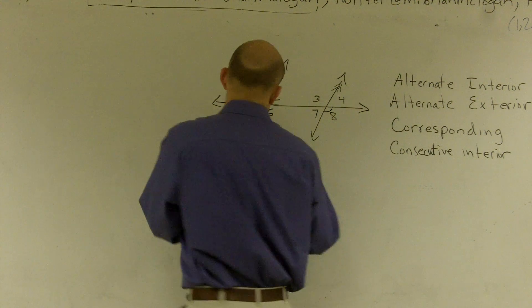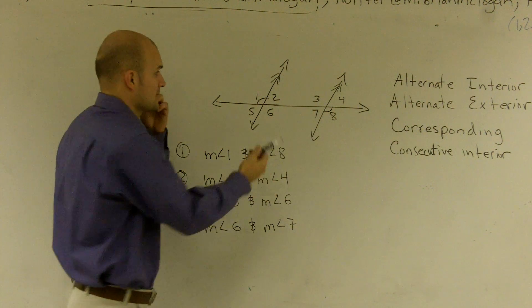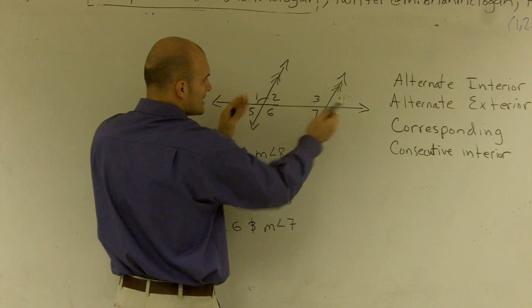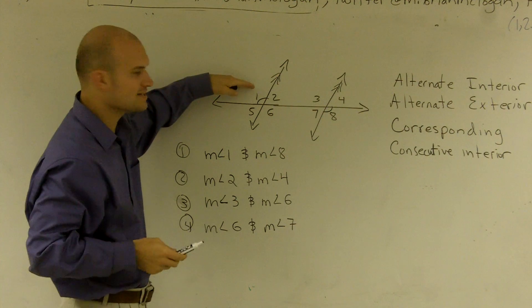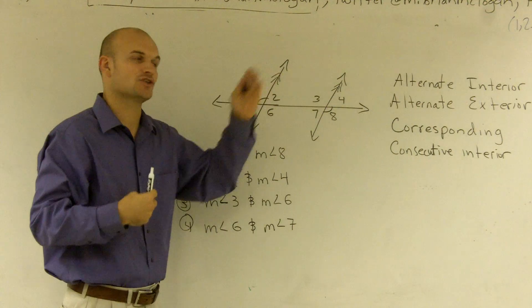Well, one thing you notice is if I have my parallel lines, these two angles are outside of my parallel lines, correct? They're both on the exterior of the parallel lines. And then also you could say that one is above the transversal and then one of the ones below the transversal. So that's where it kind of gets that alternating, right?